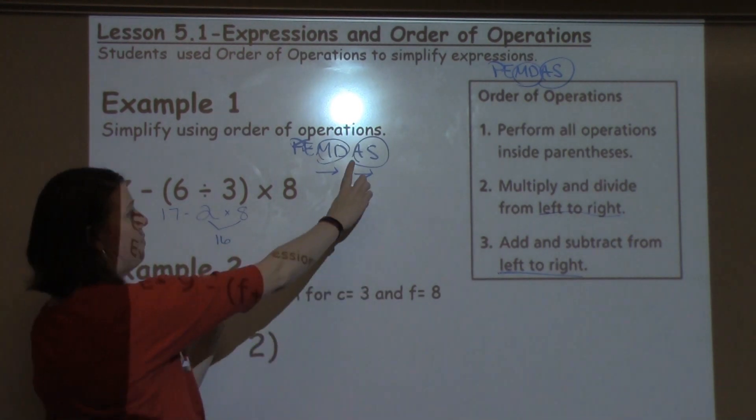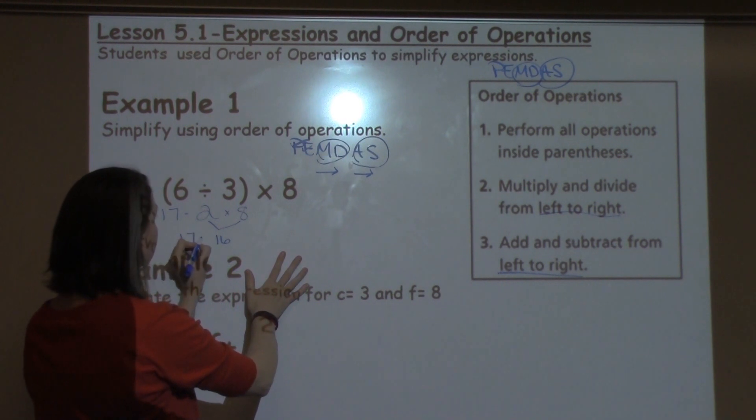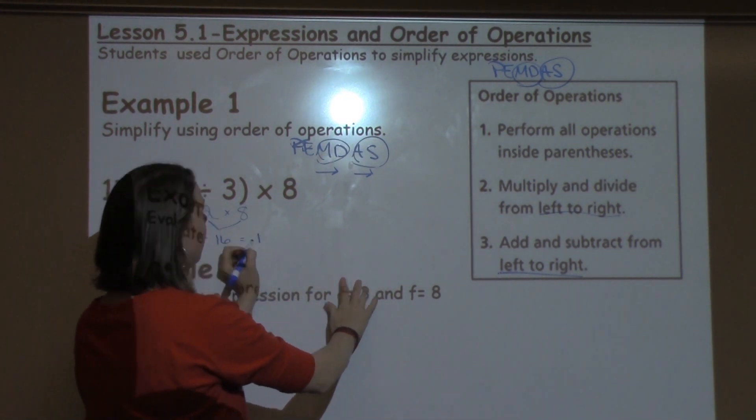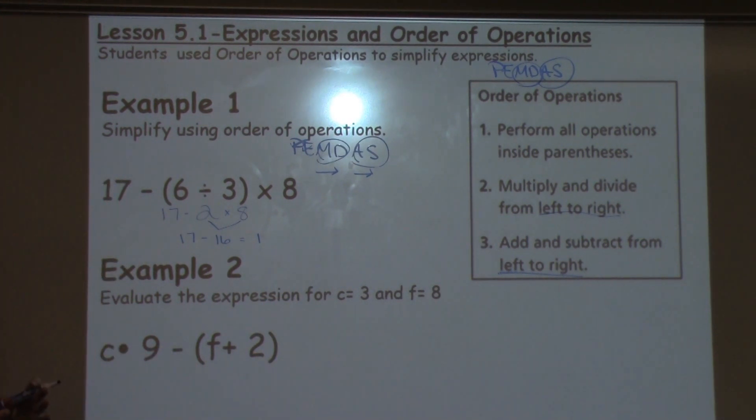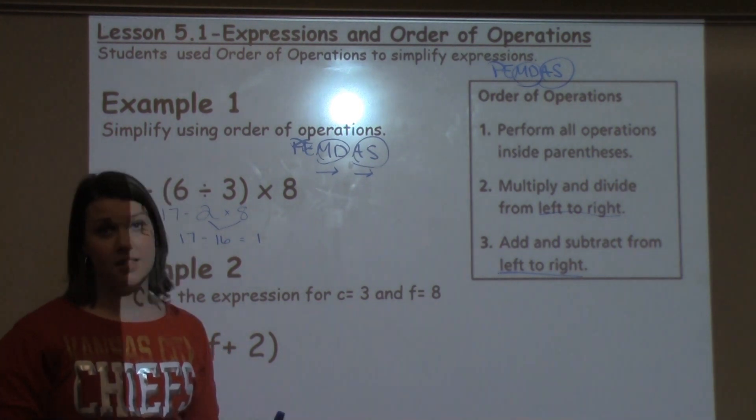Now moving to my last step, addition and subtraction, when I look at this, I do have subtraction, I have 17 minus 16, which is going to give me an answer of 1. It's really important with order of operations to go ahead and follow this every single time, because doing it out of order can result in a wrong answer.